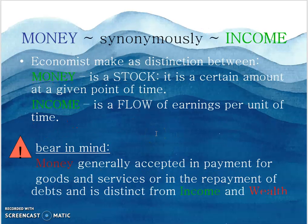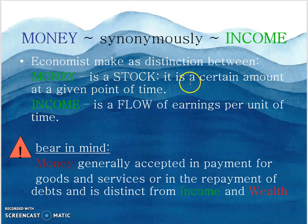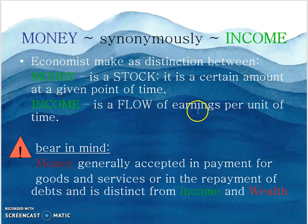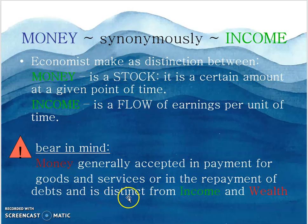Money synonymously with income: economists also make a distinction between money and income. Money is a stock — a certain amount at a given point in time. But income is a flow of earnings per unit of time. Money is generally accepted in payment for goods and services or in repayment of debt, and is distinct from income and wealth.